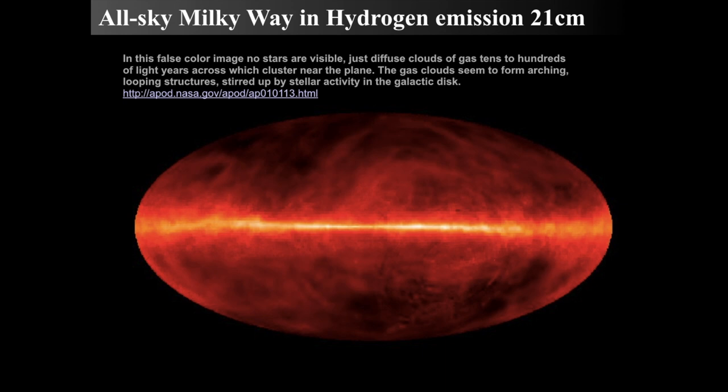Remember, stars are made up of between 70 and 75 and 80 percent hydrogen. If we can map that hydrogen, we will map where stars will form from. If there is no hydrogen, then we shouldn't see any emission. This is the all-sky image of the Milky Way in 21 centimeters, which is radio light.